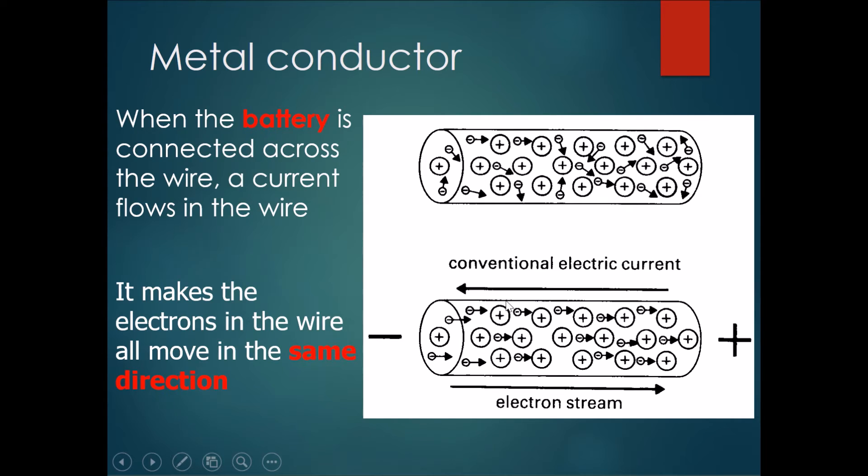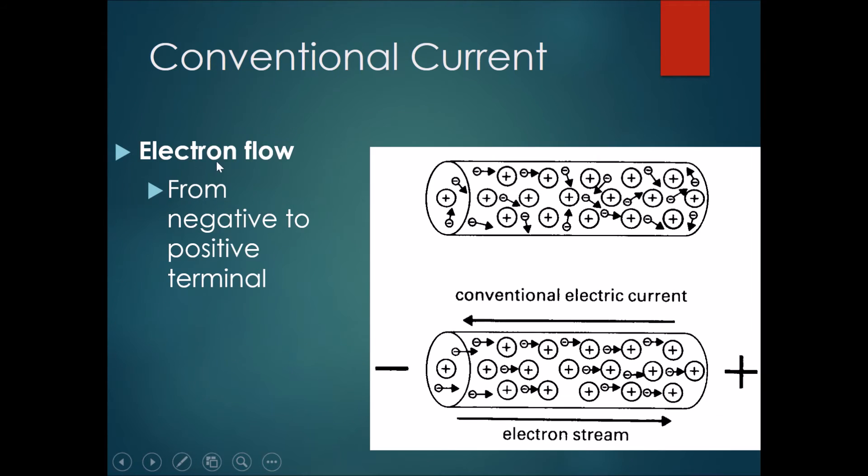You can see over here that the conventional electric current actually moves in the opposite direction to the electron stream. The electron flow is from the negative to the positive terminal and the conventional current is from the positive to the negative terminal.